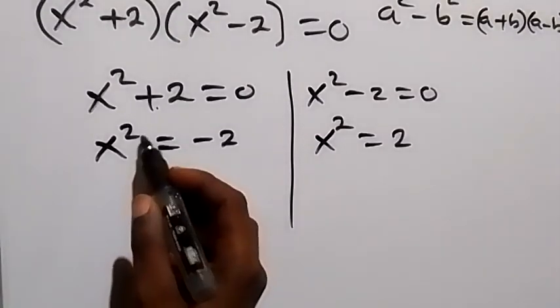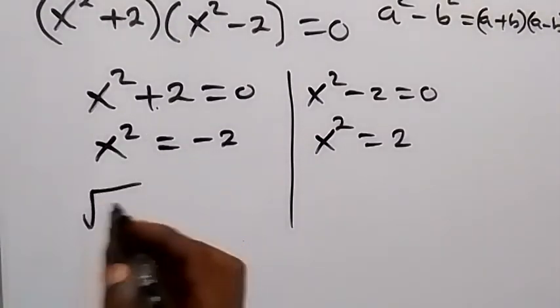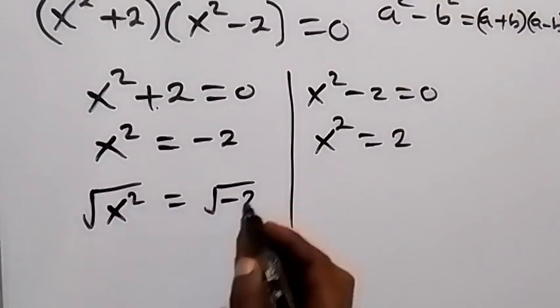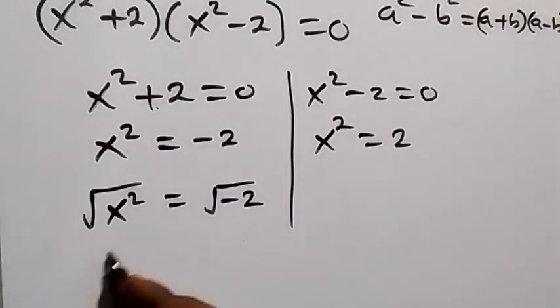And from here we can take the square root on both sides in order to remove the square. So square root of this side, we have square root of x squared equals to square root of minus 2. Then we have square cancel square root, this is x equals to